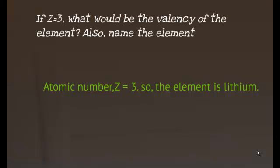First, we know Z denotes the atomic number. So, we have atomic number of the element is equal to 3. Since the atomic number is 3, the element with atomic number 3 is lithium.